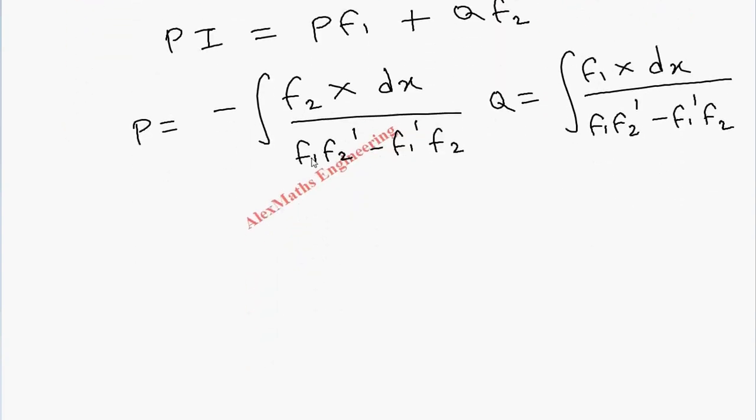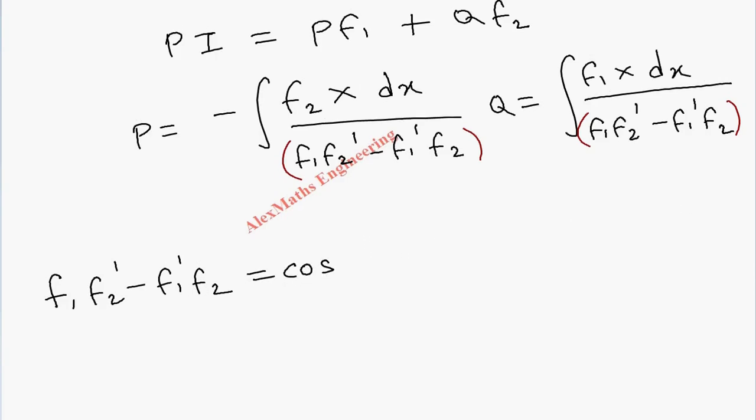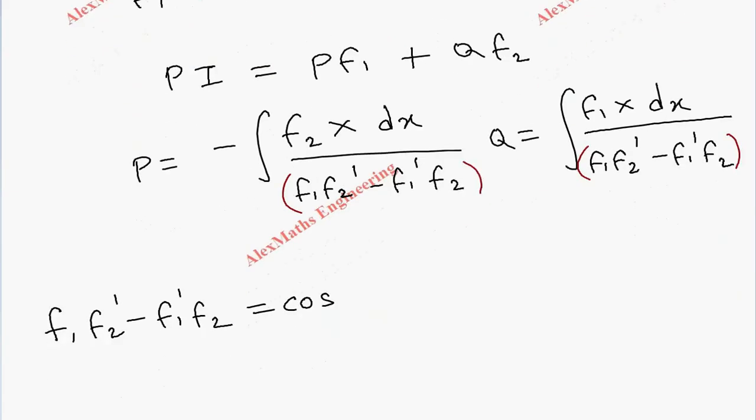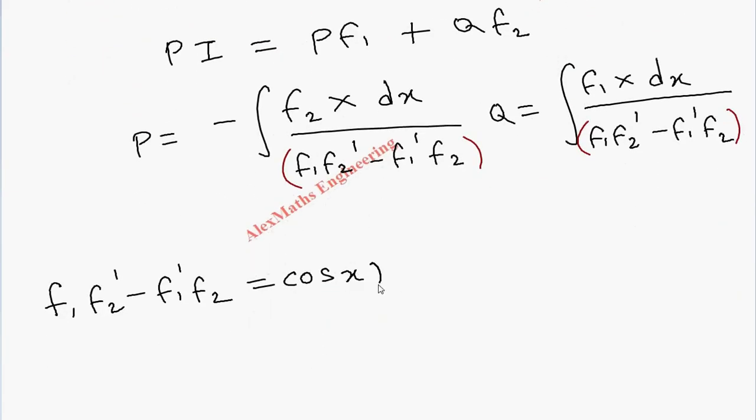We have f₁f₂' - f₁'f₂ in both terms, so it is better to find this separately. f₁f₂' - f₁'f₂ equals f₁ is cos x, f₂ is sin x, so cos x times differentiation of sin x.